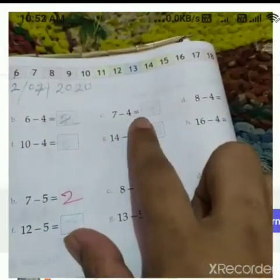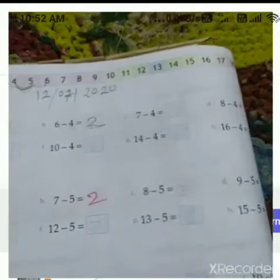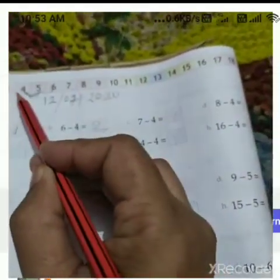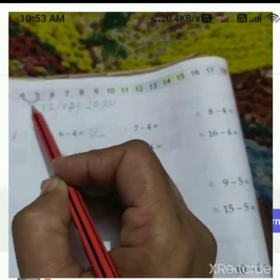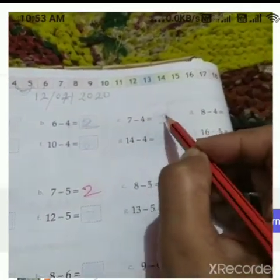This 7 minus 4. This is 7, we have to go to 4. This 1 number is 6, 2 number is 5, 3 number is 4. How many numbers back? 3. So 7 minus 4 is equal to 3.